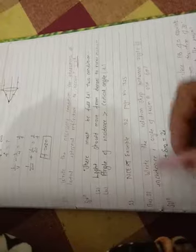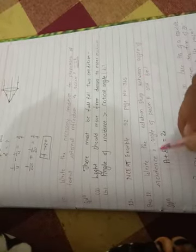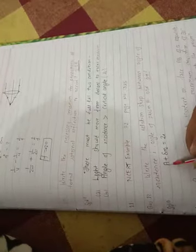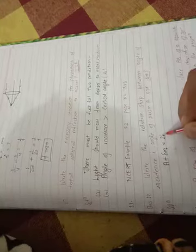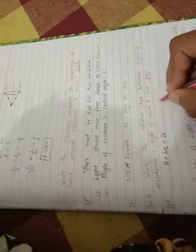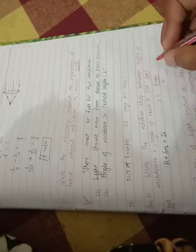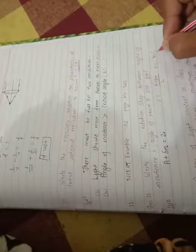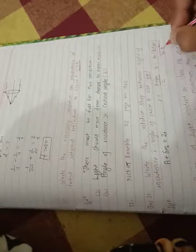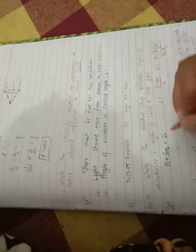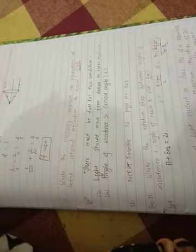If you are facing any problem, please comment in my comment box. Next question 12: Write the relationship between angle of incidence i, angle of prism A, and delta m, where delta m is minimum deviation. It is a very simple relation: A plus delta m equals 2i, because i equals A plus delta m divided by 2.